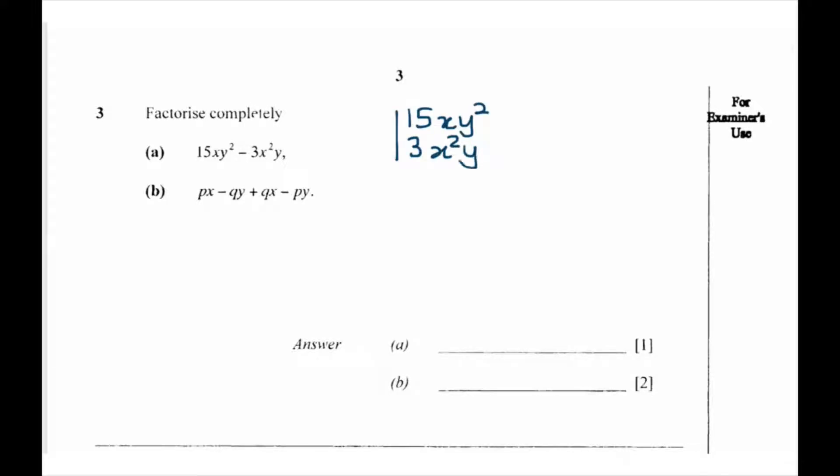The first step is to list our terms, which is 15xy² and 3x²y, and try to find the common denominator that can be divided into both terms.